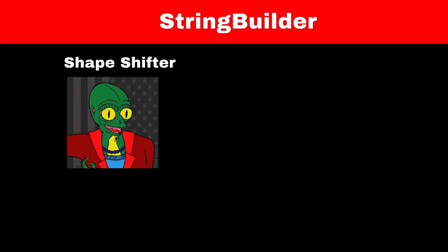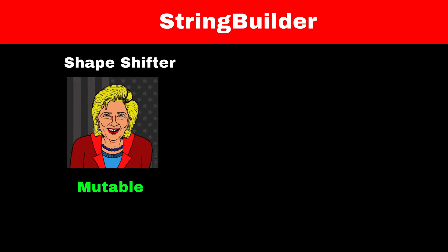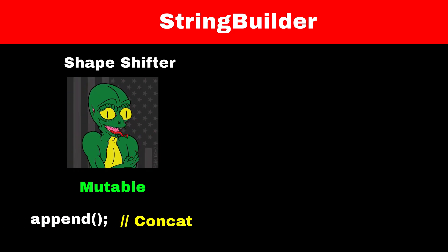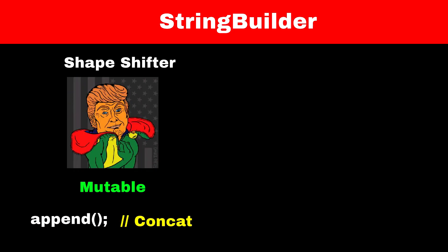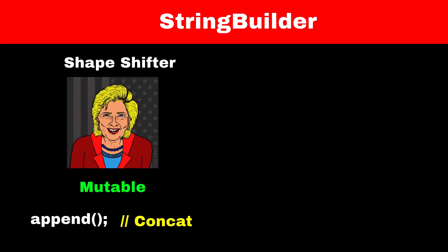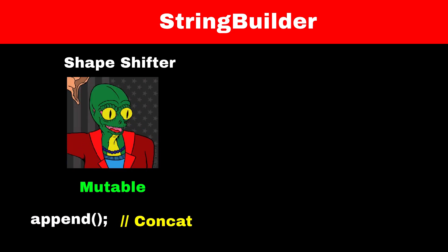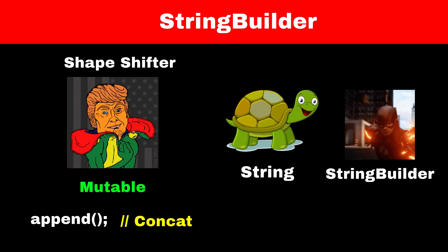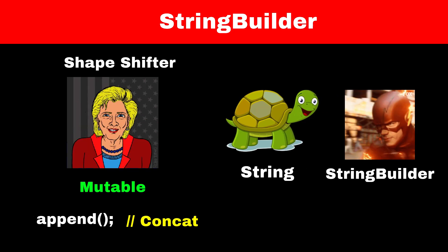To overcome this, Java developers designed the StringBuilder class. It's like a shapeshifter that can magically change itself. It's mutable, so we can use the append function to modify it. Concatenation happens in no time and we don't need to create clones. That's why StringBuilder is faster than the String class.